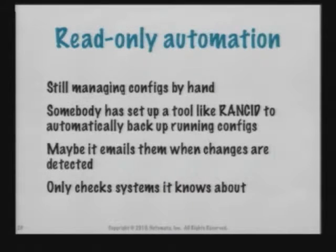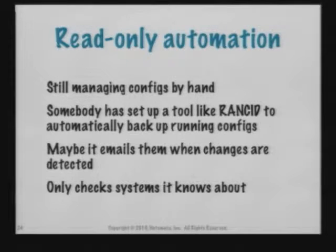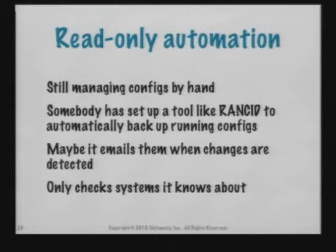The next step a lot of people get to is what I call read-only automation, which is basically automated backups. Rancid is a great tool for this — it goes out and pulls down router and device configs from whatever devices you point it at, saves them in a directory, and tells you if they change. If somebody makes a change on the device since the last time Rancid was run, it'll tell you and send you a diff. You're still managing your configs by hand, but at least you know when things have changed and you have a repository so if a device dies, you can put its most recent config on its replacement. One downside: these systems only check the systems you tell them about, so adding a new site means one more thing you have to remember to do.